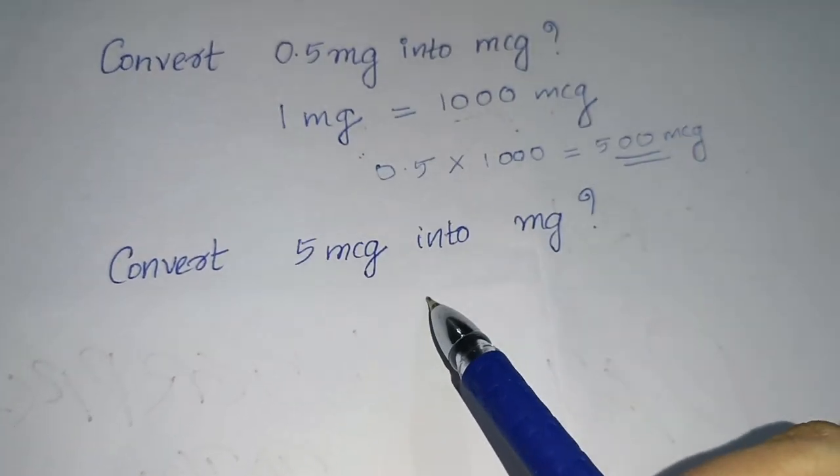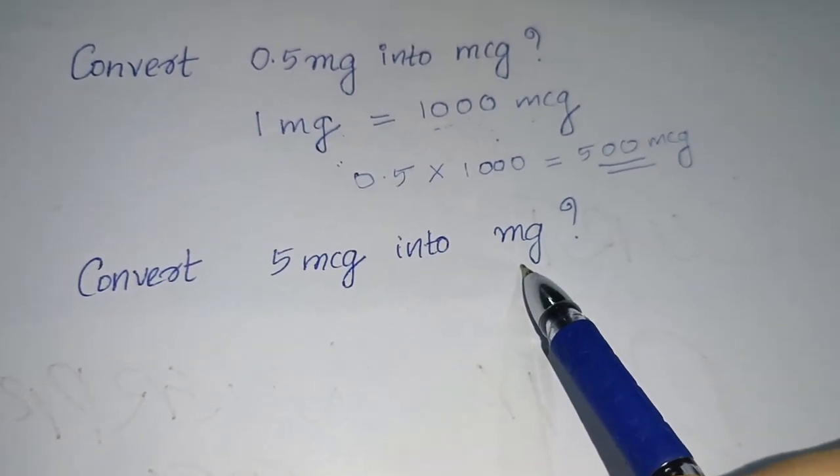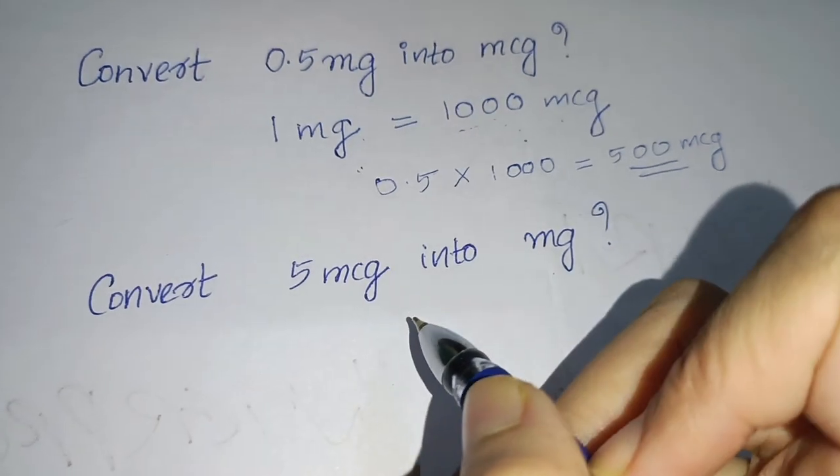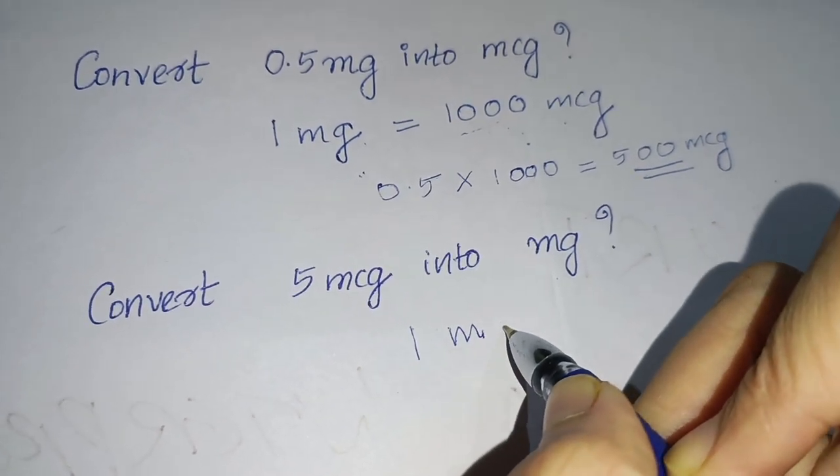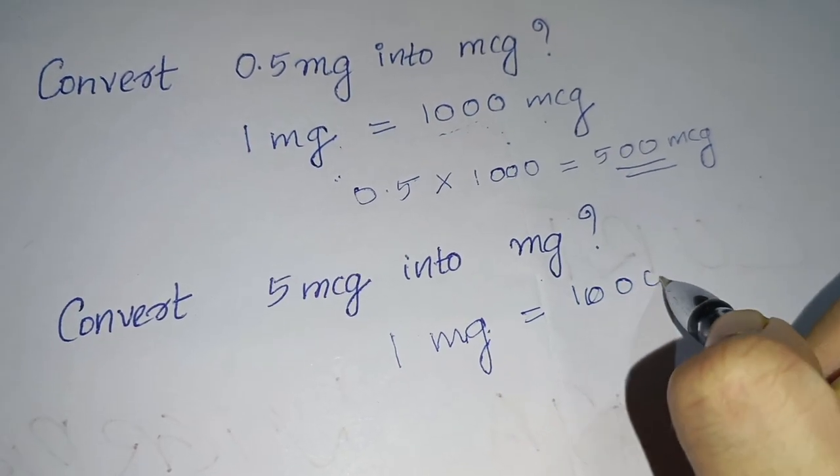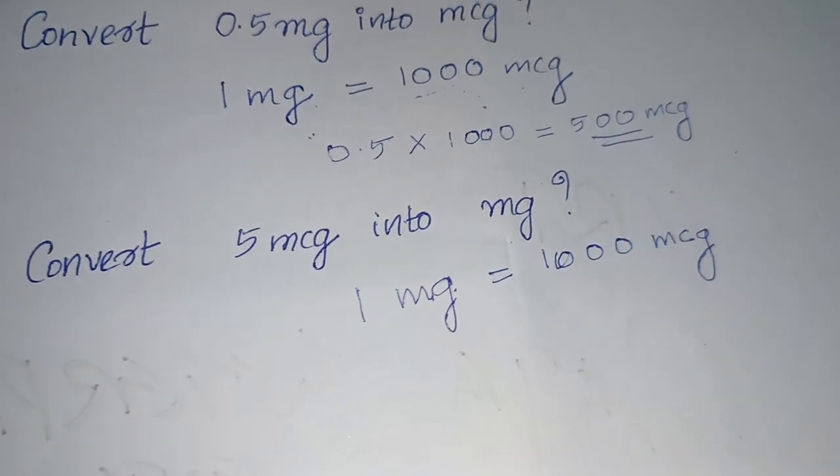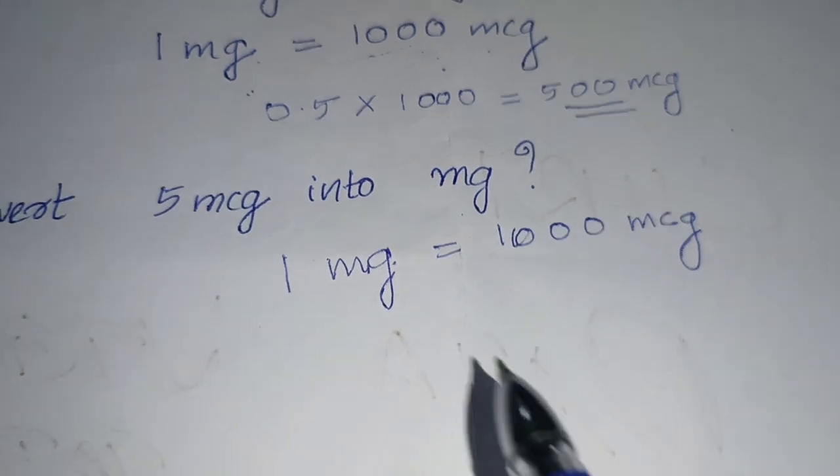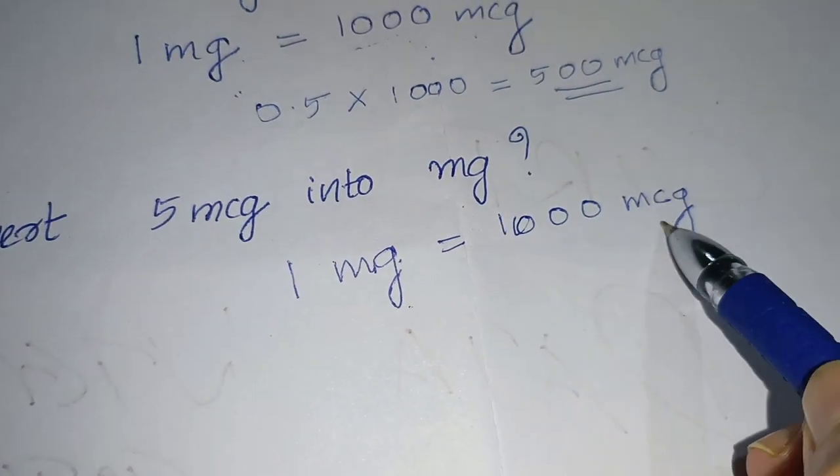On coming to next question, convert 5 microgram into mg. They are asking you. So here also you can write the standard formula to avoid confusion. 1 mg is equal to 1000 microgram. So here mg is given, microgram is given.